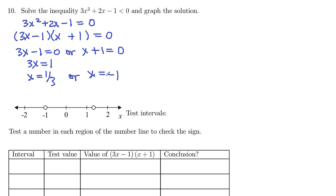Positive 1 third, negative 1. So I've marked them off here. And so our test intervals are going to be here. Negative infinity up to negative 1. In between, negative 1 to positive 1 third. And then this interval here to the right, which is 1 third up to infinity.